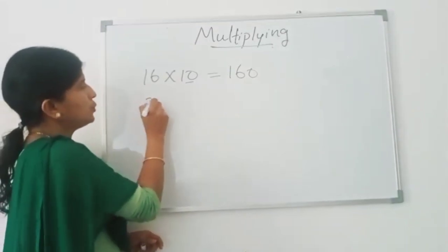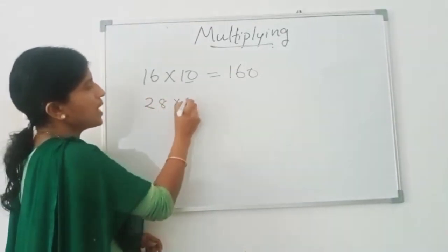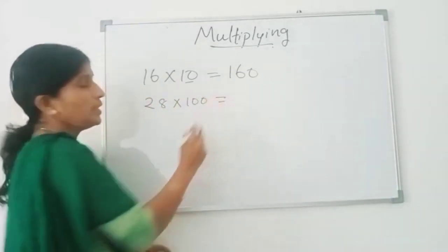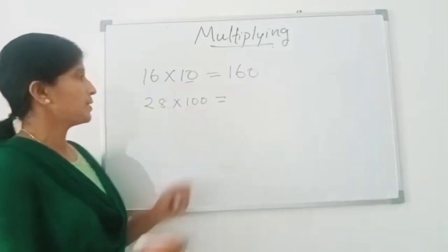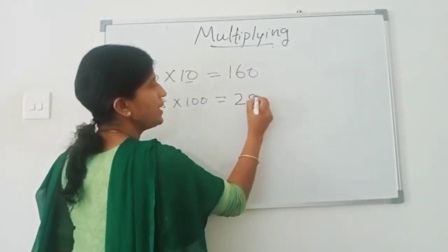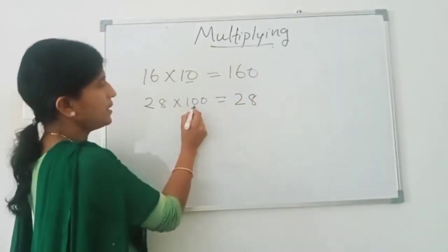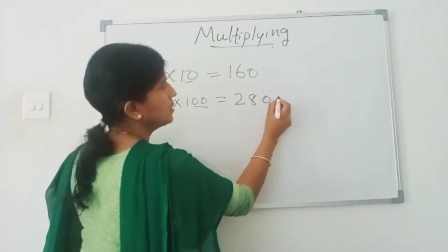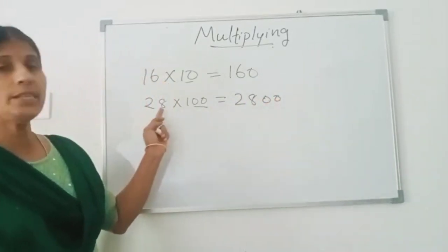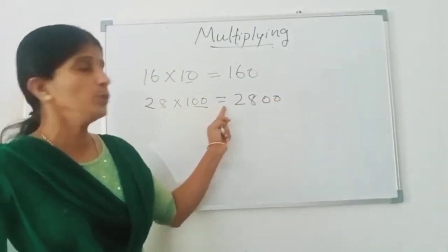Then, 28 times 100. Just write 28 and add these two zeros. So, 28 times 100.